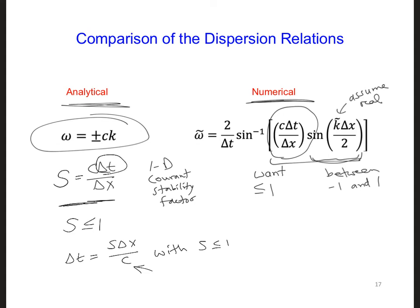So setting dt equal to S delta x over c with S less than or equal to 1 should always be sufficient to keep the numerical dispersion relation from having a complex number.